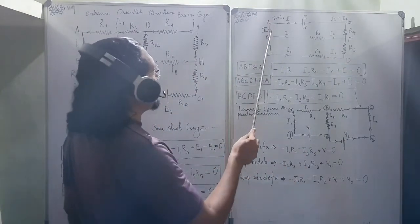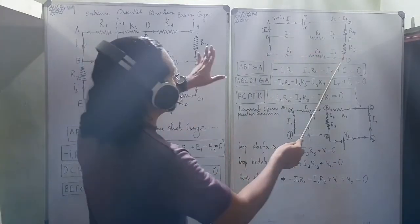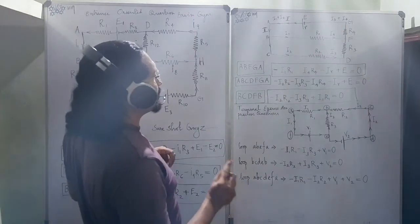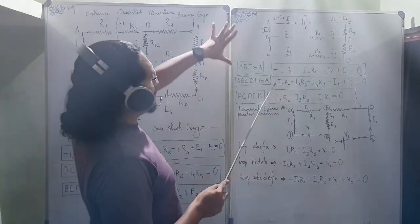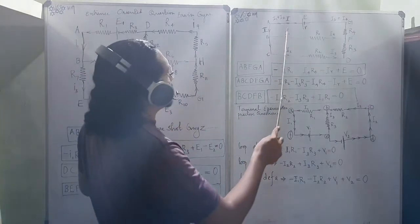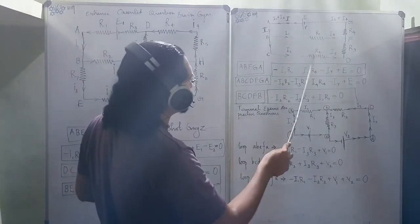Then A-B-C-D-F-G-A. This whole loop thing. So, this whole big thing. Minus I2. Minus I2 into R2. This L is given over here. Same as this thing. Same thing over here.